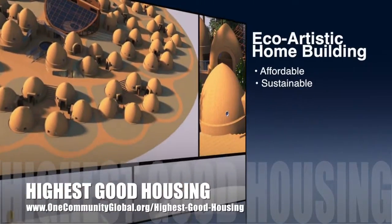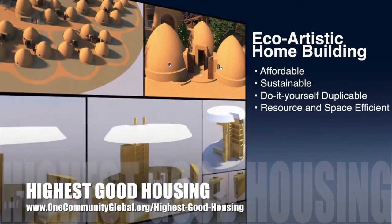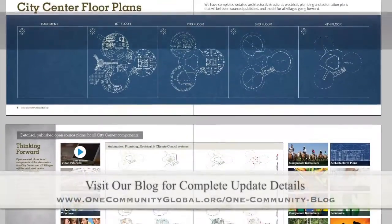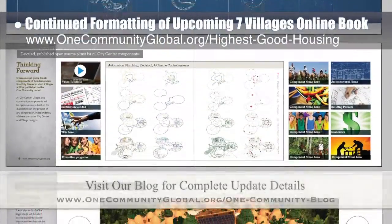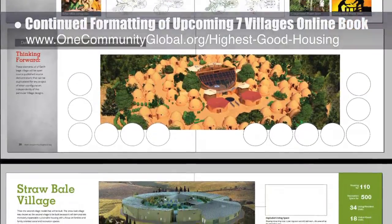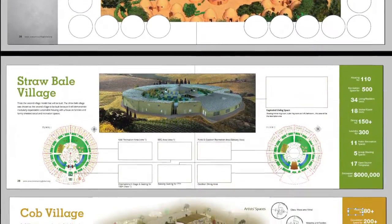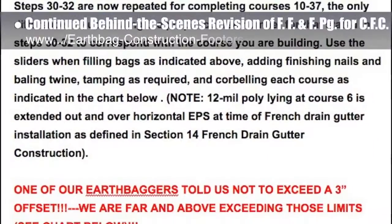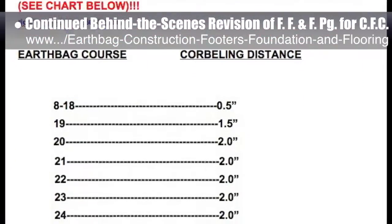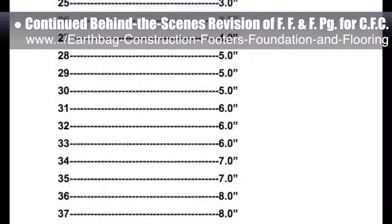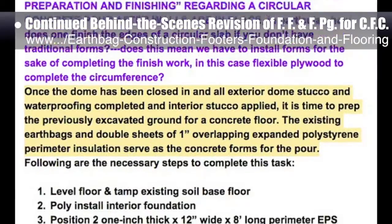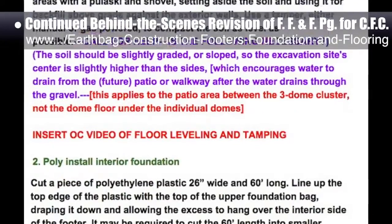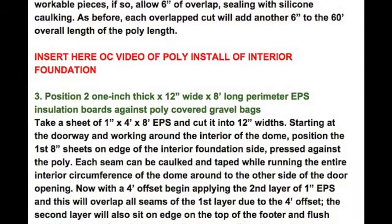One Community's approach to highest good housing is eco-artistic home building that is affordable, sustainable, do-it-yourself, duplicable, resource and space efficient, and consists of seven different sustainably constructed village models. This week the core team continued updating the formatting of the upcoming seven villages online book pages, focusing on the earthbag village, straw bale village, and cob village presentations. The team also put another 10 hours into the behind-the-scenes revision for the footers, foundations, and flooring page for the crowdfunding campaign, with the main focus on pages 150 to 154 — addressing measurements, proofreading, grammar, and sentence structure. We are now 98% complete with this total update and rewrite.